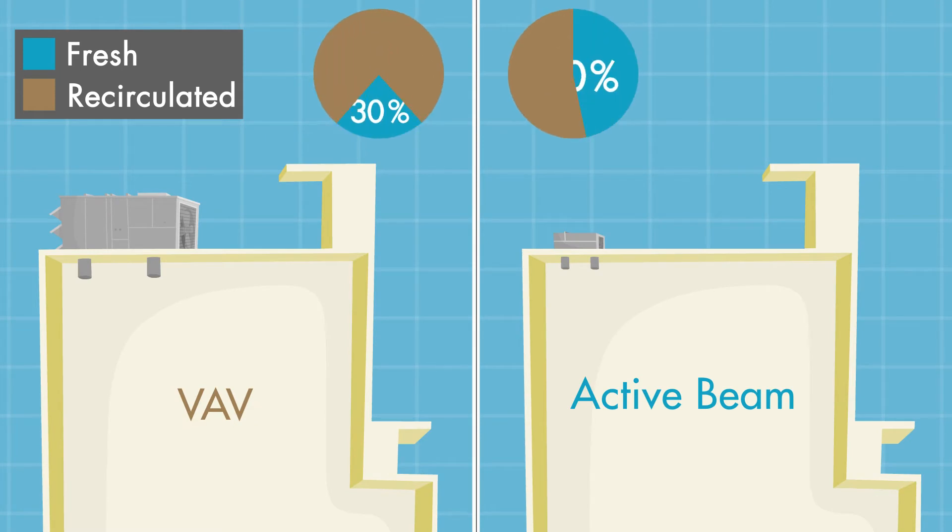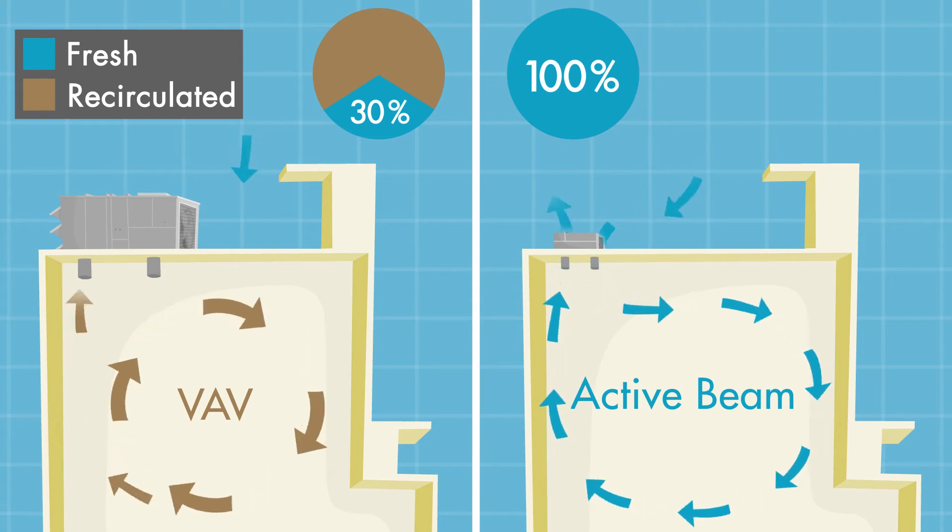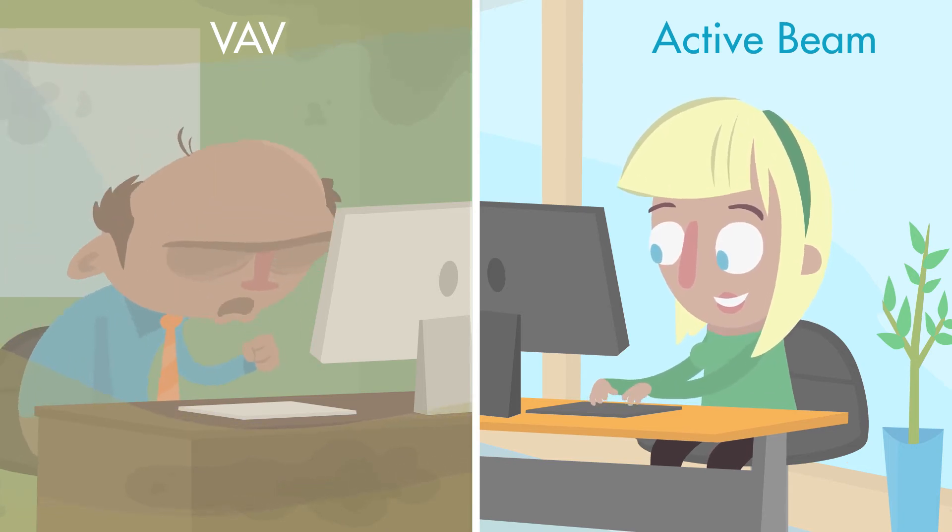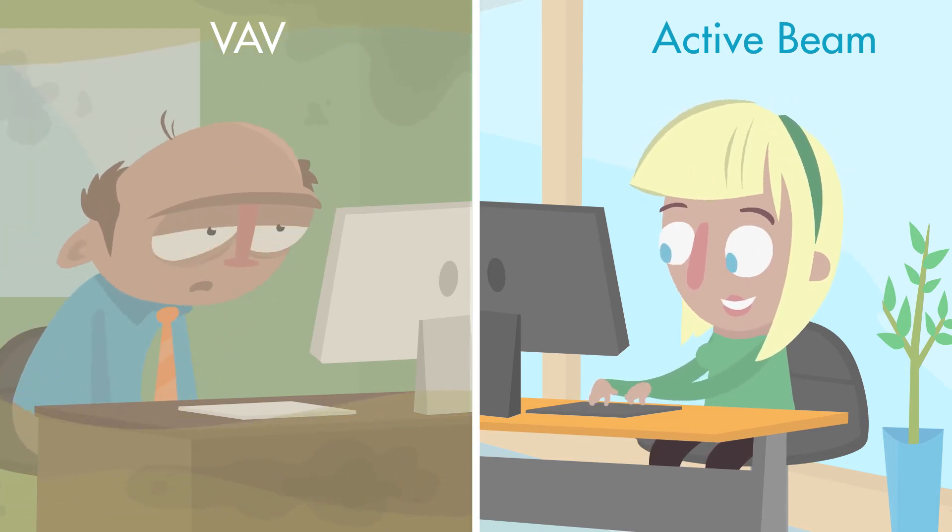Third, because the total volume of air distributed is fairly small, it can be comprised of 100% outside air. This offers a fresher tenant environment, with no more stale air being recirculated through the building.